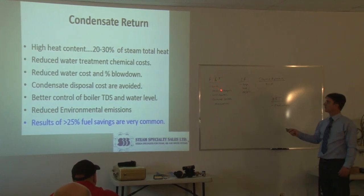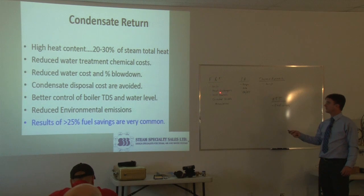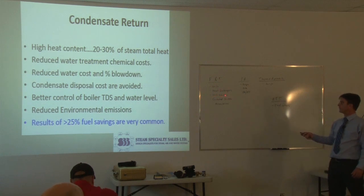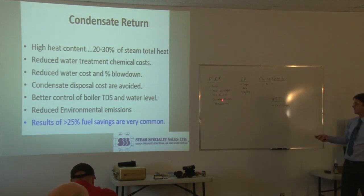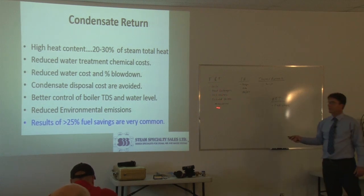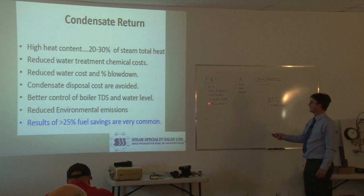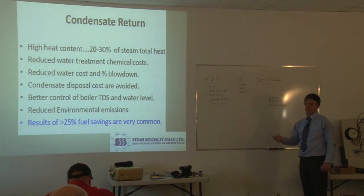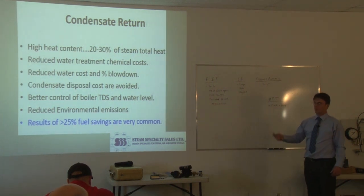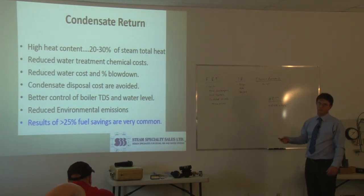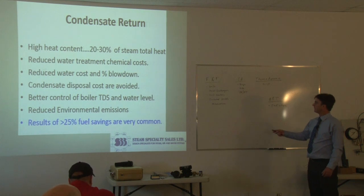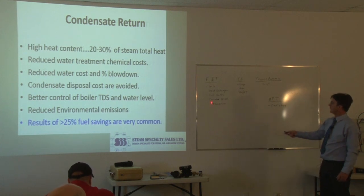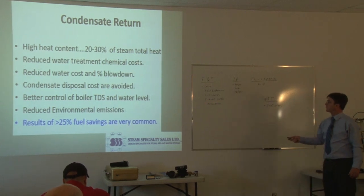You can use float and thermostatic traps on coils, heat exchangers, unit heaters, and jacketed vessels. The one thing to remember is modulation — anything where the flow isn't constant, where the pressure can vary, the F&T trap is probably your best choice.